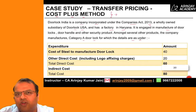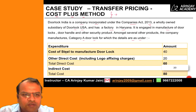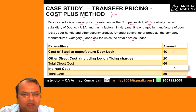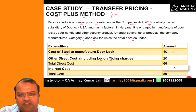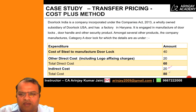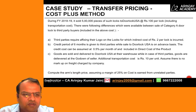Among several other products, the company manufactures Category A door locks, for which the details are as follows. The cost of steel to manufacture the door lock is 40, other direct costs including logo affixing charges is 20, making the total direct cost 60. Indirect cost is 20, and therefore the total cost is 80.